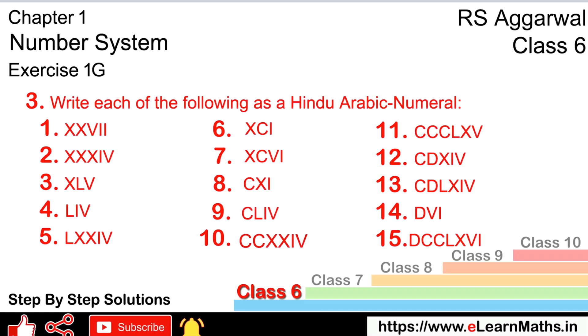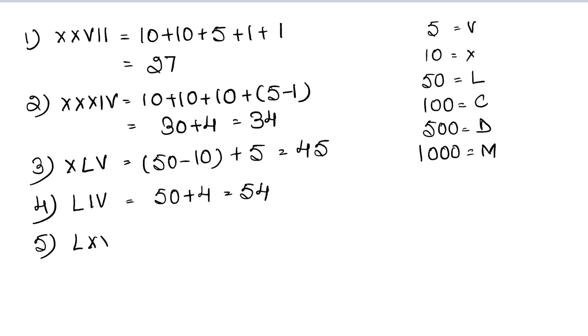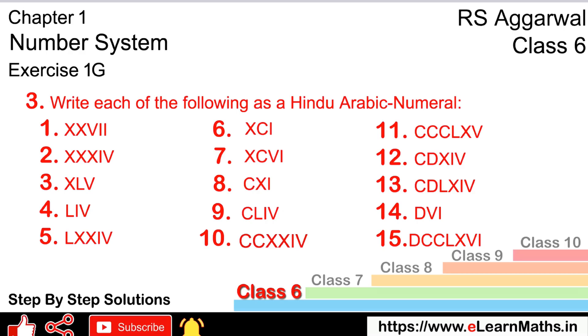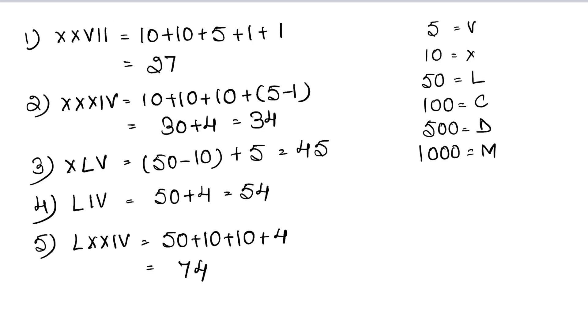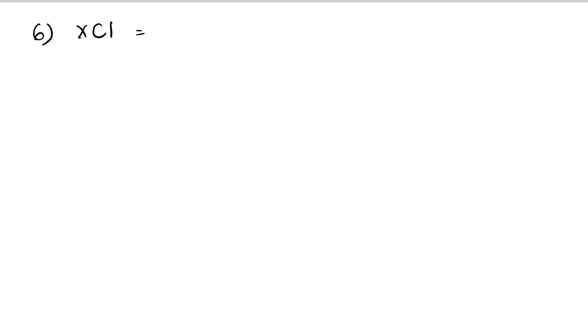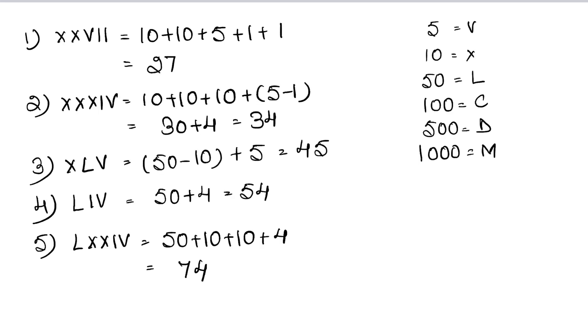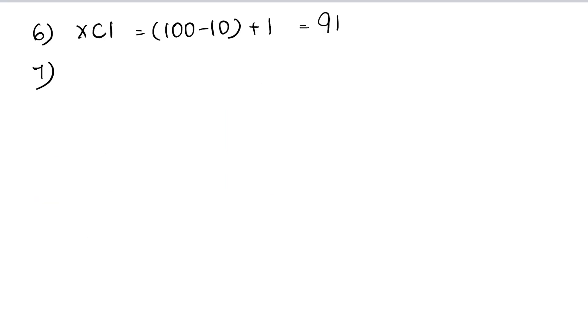Fifth part is LXXIV. 50 plus 10 plus 10 plus 10, and IV is 4, so that is 74. Sixth part is XCI. C is hundred and X before it means hundred minus 10, plus 1, that is 91.